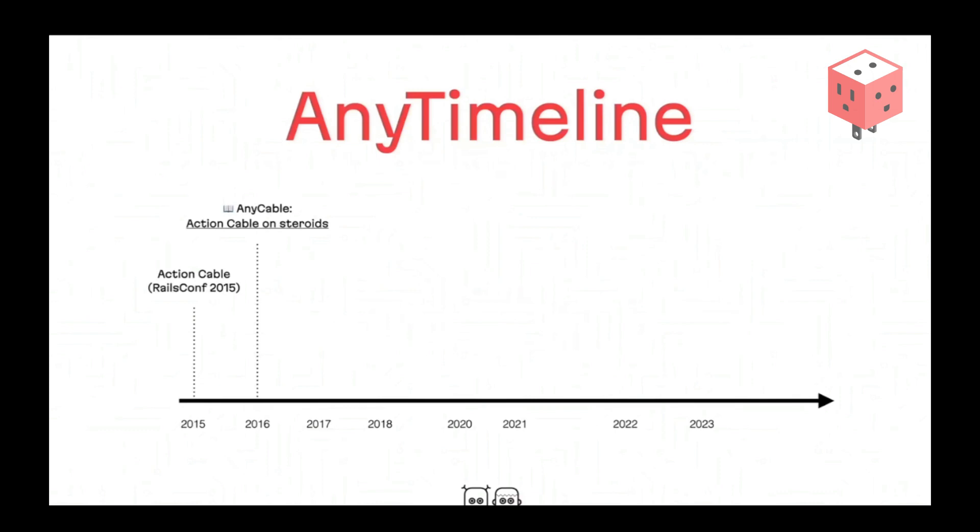That name underlined the idea behind AnyCable, which we had for many years: it's just a plug-and-play replacement for the Action Cable server, but nothing else. Clients, Ruby code — you write it the same way. You just switch to a different server.